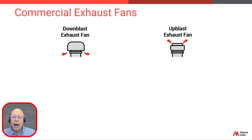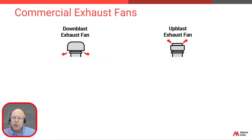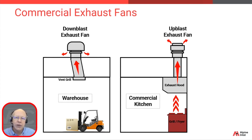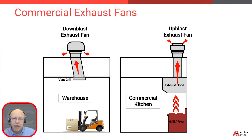It might help to see why a building might have one type versus the other. Here we see both types — that downblast on the left, the upblast there on the right. Downblast units are used for general ventilation and expelling heat, while upblast are specifically for commercial kitchens and some industrial applications, where we need to eject grease or chemical-laden air up and away from the roof surface. Note that for downblast, a warehouse is just one example — they could also be used for general office space or even retail space.